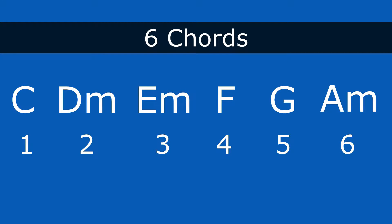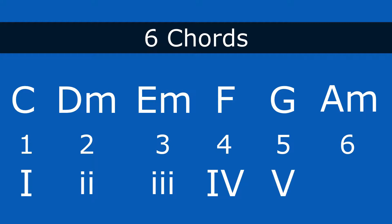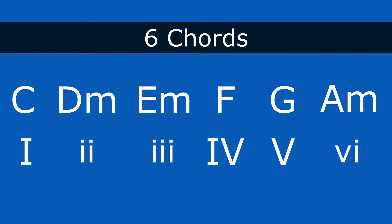But instead of using Arabic numbers — we use that for scale degrees, the single notes of the scale — we're going to use another numbering system: Roman numerals. And we're going to number each one of those with Roman numerals, replacing the Arabic numbers. Now the Roman numerals represent chords. Uppercase is major, lowercase represents minor. So it kind of shows you what scale degree it's built from and the tonality of the chord, whether it's major or minor.